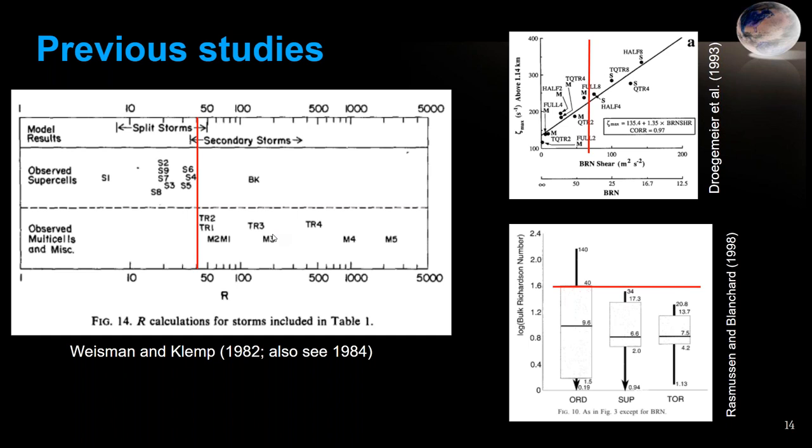Going forward 10 years, Kelvin Droegemeyer and others did a study with more advanced modeling and different parameter spaces and hodograph shapes. The BRN 40 line is in red — S's indicate supercell simulations, M's were multi-cell simulations. Droegemeyer confirmed the earlier results of Weissman and Klimt.